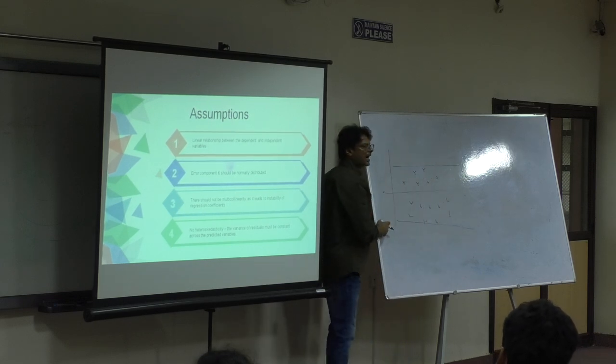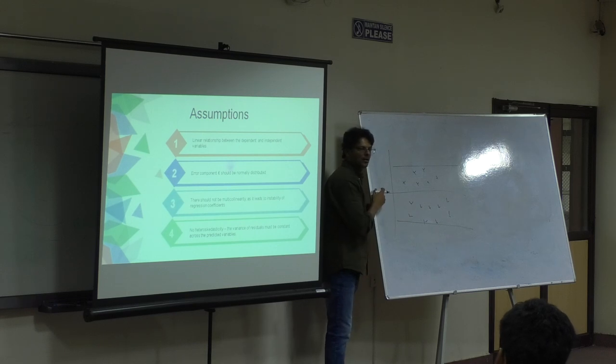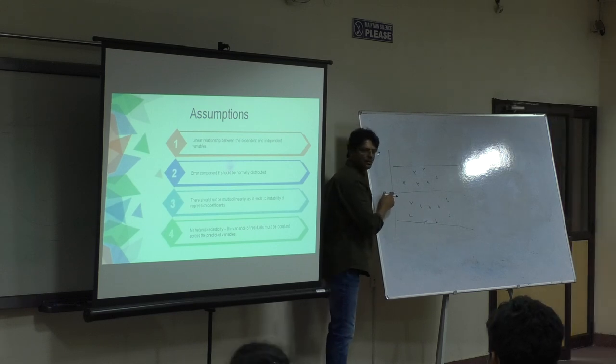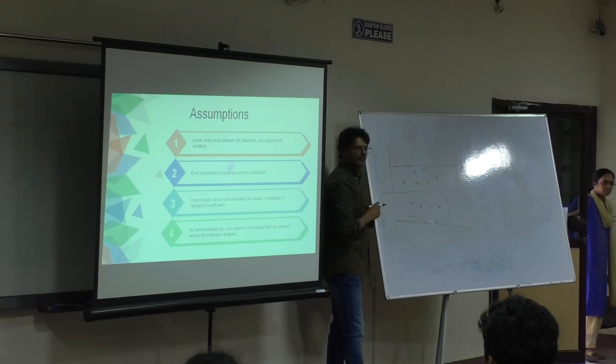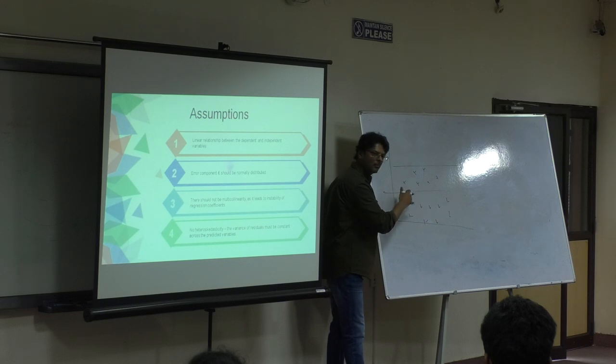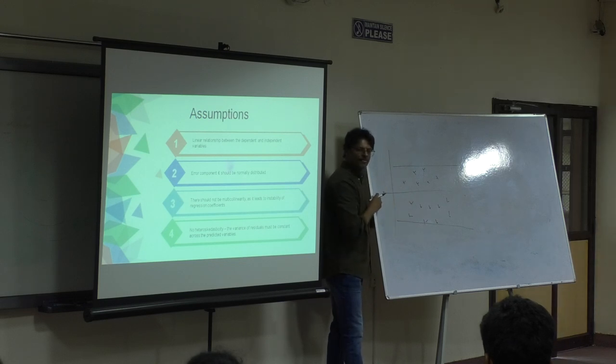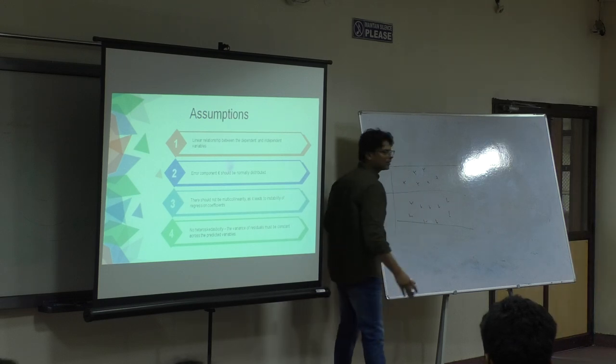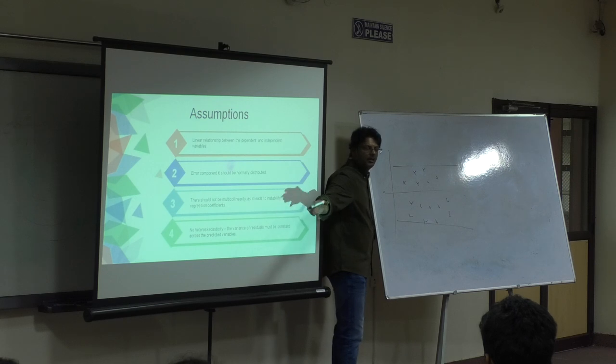If I draw a scatter plot of the residual data with the independent, this is how it will look, right? And which means this is normally distributed. Correct? And that is what he is saying - there should not be heteroscedasticity.